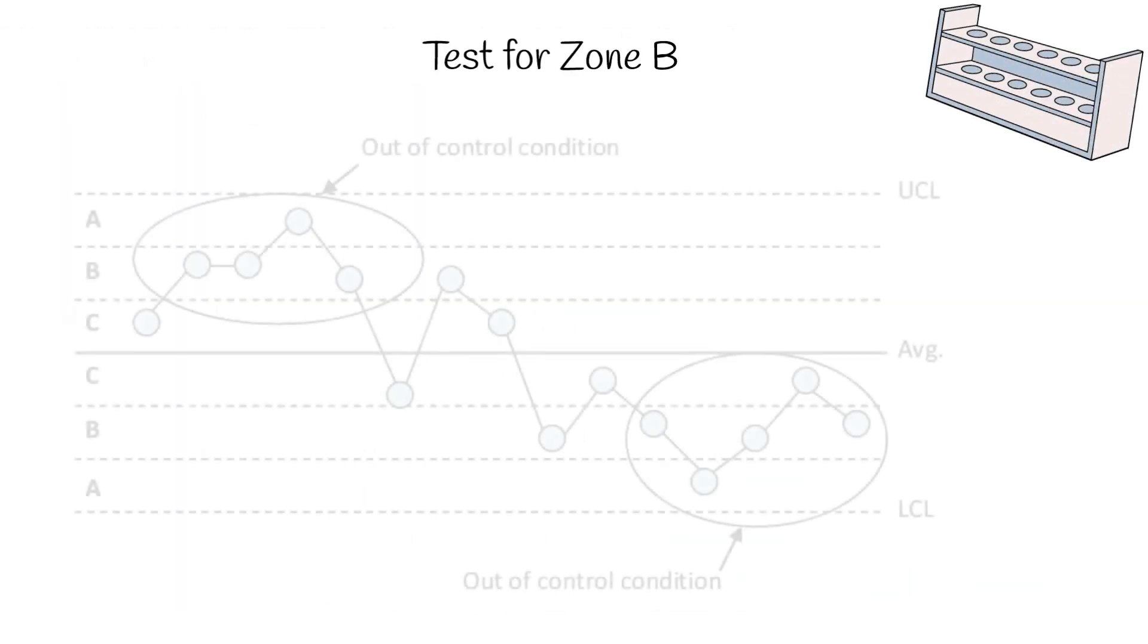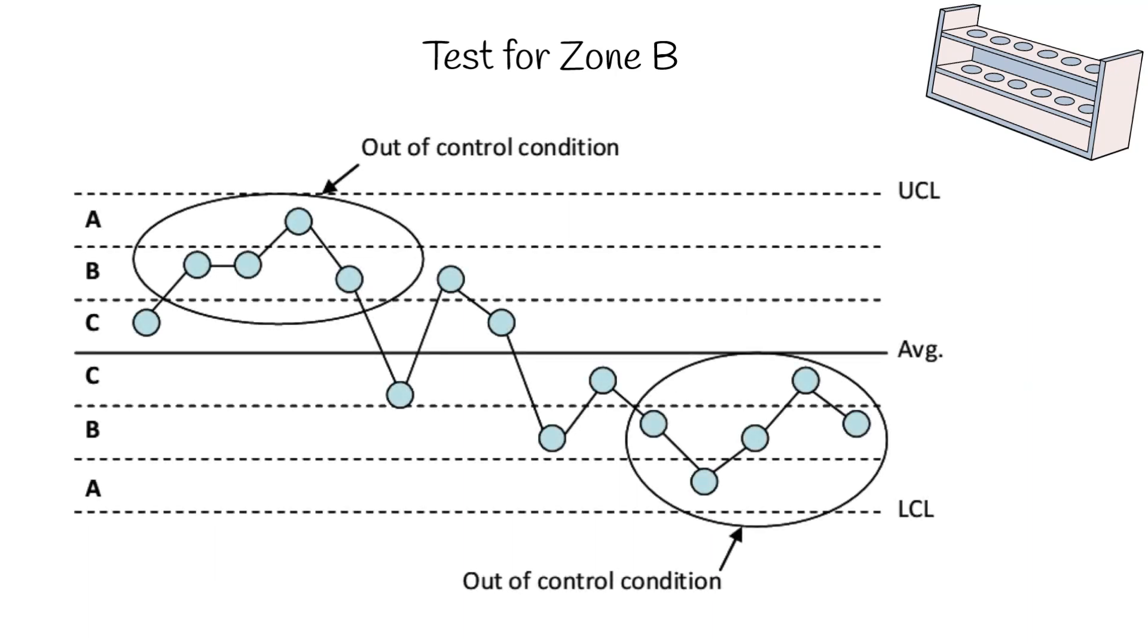Now, look at the test for zone B. Here you're going to consider that you have an out of control situation if you have four out of five consecutive points in zone B or beyond, as you can see in these two examples.